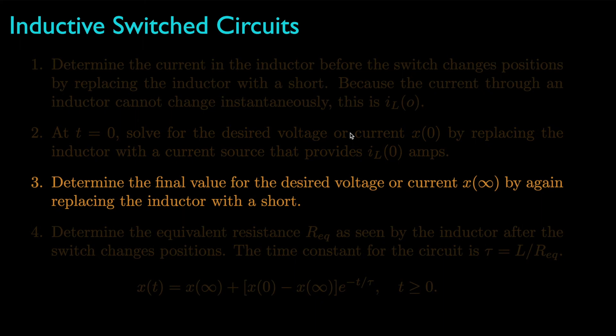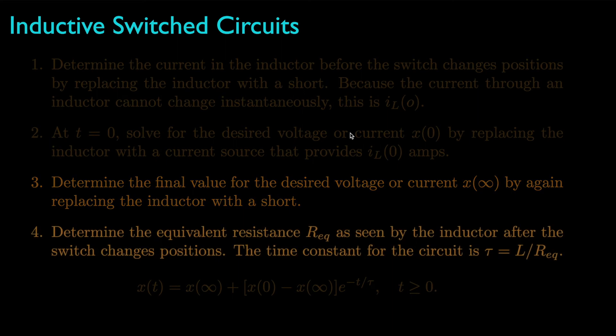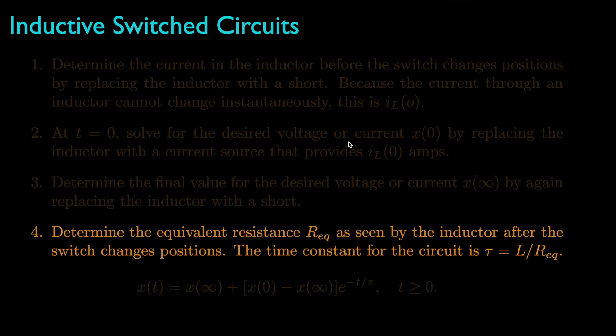Next, we solve for the final value for the desired voltage or current by examining the circuit in steady-state with the switch in its new position, and again replacing the inductor with a short. Finally, we evaluate the equivalent resistance for the circuit as seen through the inductor's terminals, and use this resistance to determine the time constant for the circuit, which is the ratio of the inductance to the equivalent resistance.